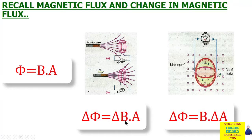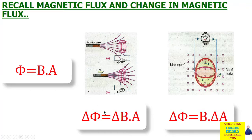اگر ایسا ہو کہ یہ coil ہے اور یہ stationary magnet تھا لیکن اب آپ اسے v velocity سے move کرتے ہیں towards the coil، تو there will be a change in the magnetic field strength۔ اس equation کو جو پہلے BA تھی اب ΔBA لکھیں گے — Δ یعنی change۔ اس پوری situation کو ہم consider کریں گے change in the magnetic flux۔ Similarly اگر area rotate کریں magnetic field میں — کبھی perpendicular to field، کبھی parallel to field — تو area change ہو رہا ہے، یہ بھی change in magnetic flux ہے۔